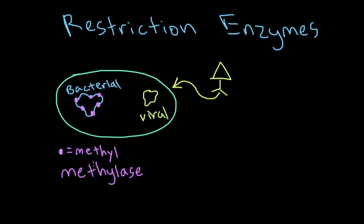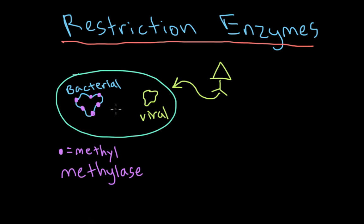This methylation allows the bacteria to recognize its own DNA and identify any unmethylated DNA as foreign. Another enzyme floating around in the cytoplasm — called a restriction enzyme — recognizes the methylated bacterial DNA, but when it encounters foreign unmethylated DNA, it destroys it. This is how bacteria protect themselves from viral infection: by methylating their own DNA and destroying any foreign unmethylated DNA.